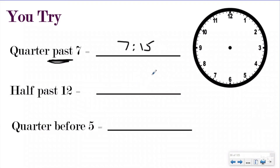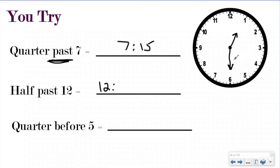If you have half past 12, we know we're past 12, so my hour is going to be 12 something. And then half of an hour is 30 minutes, so really what they're saying is 30 minutes past 12. Five, ten, fifteen, twenty, twenty-five, thirty. Or you could have just split the clock in half in your head and drawn where the minute hand would go. So that is 12:30 — we are past 12 and we are half of an hour past 12, and we just learned that half of an hour is equal to 30 minutes.